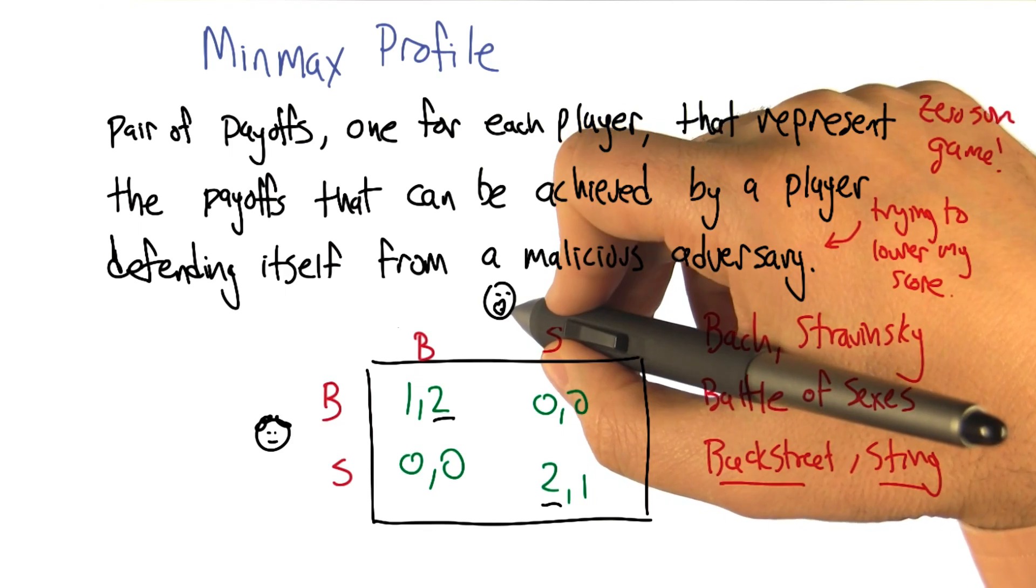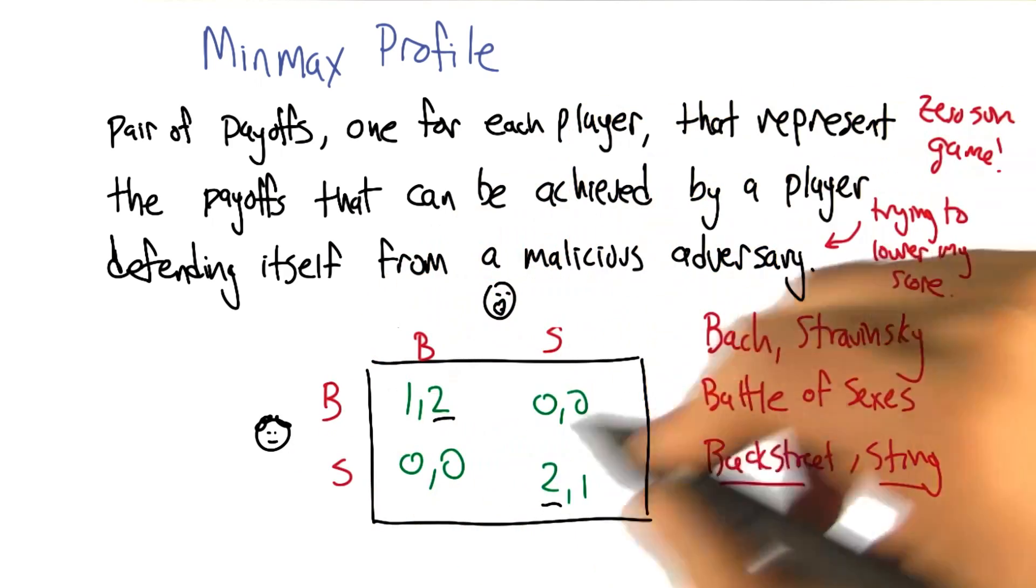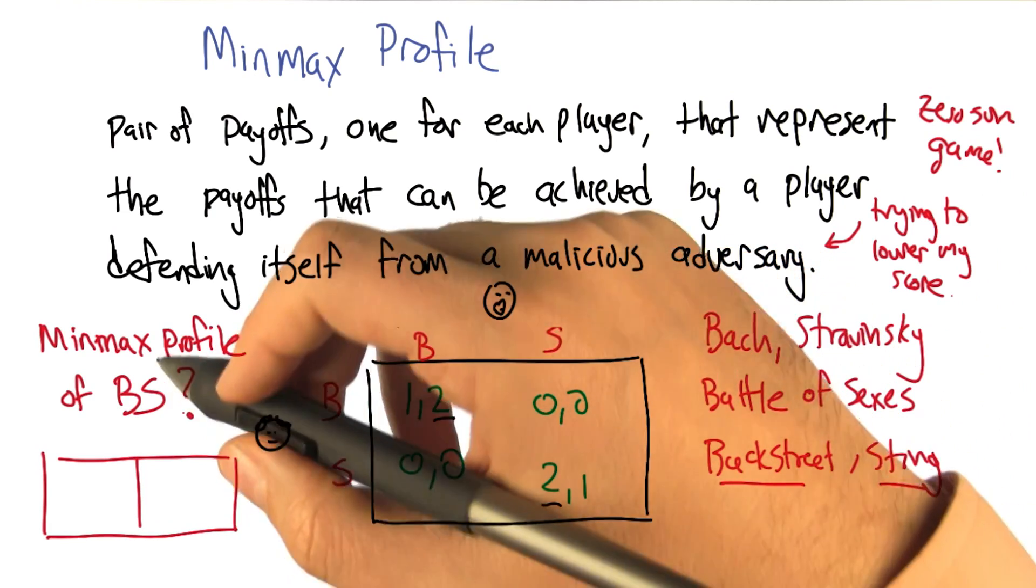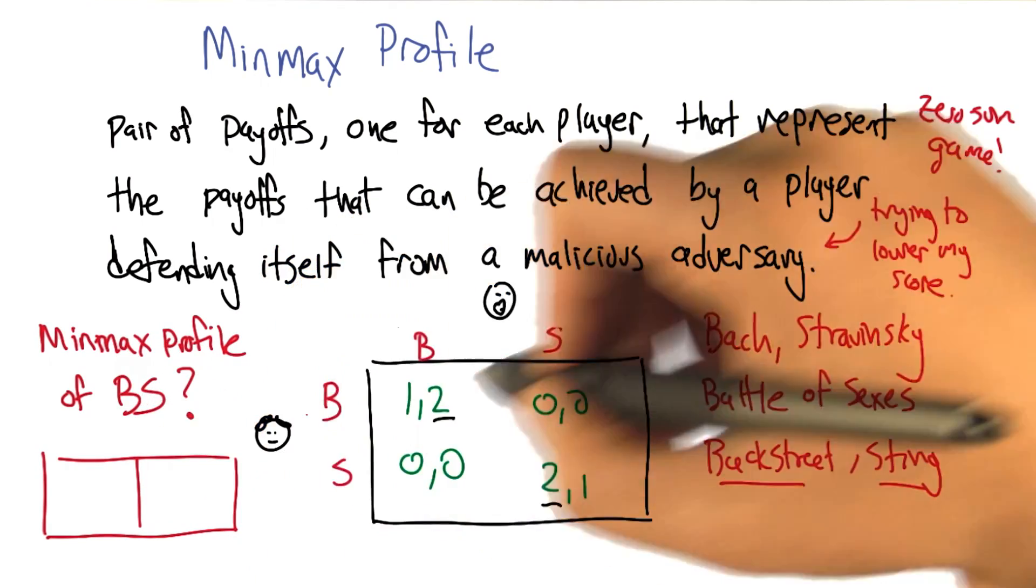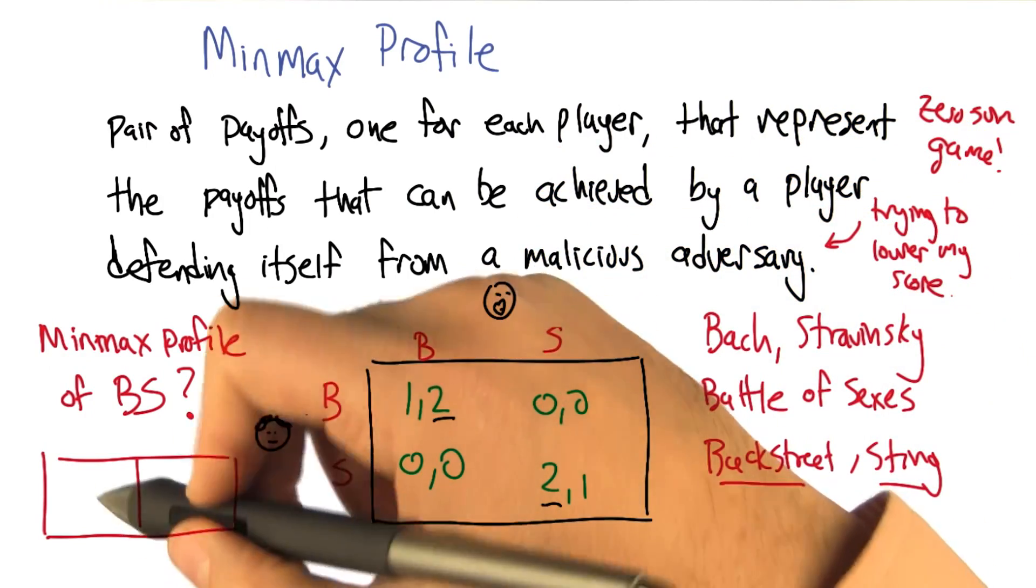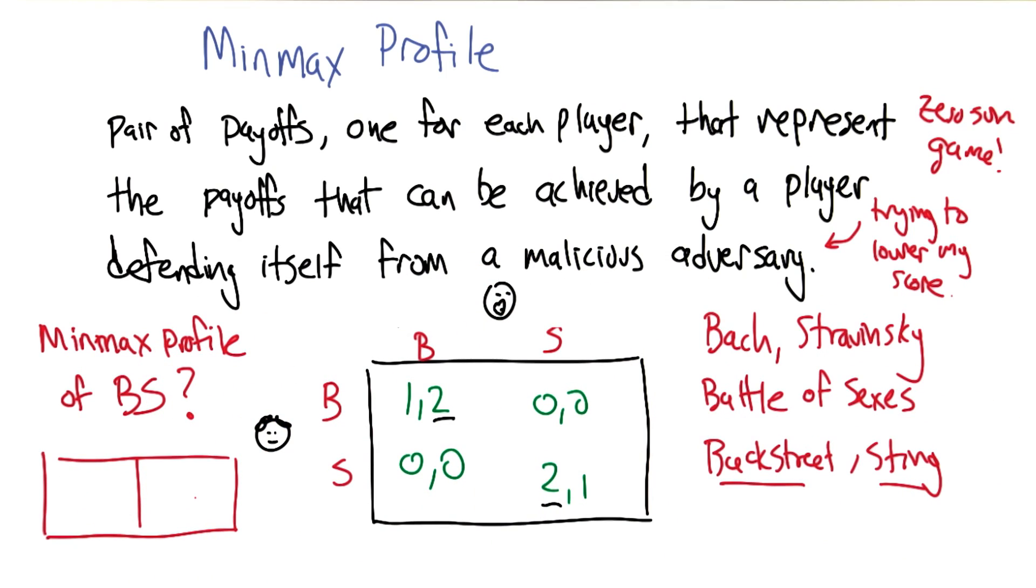Smoove's score is going to be the score that he can guarantee himself even if Curly is trying to minimize Smoove's score. So let's do this as a quiz. So I want you to find the min-max profile for this game, this Bach Stravinsky game or Backstreet Sting game, and put the number for Curly in the first box and Smoove in the second box. Go.